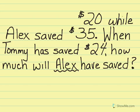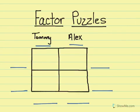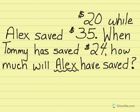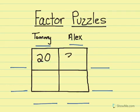This is a proportion problem. To solve this problem, we're actually going to use our factor puzzles. From the problem, we know that Tommy has saved $20 and Alex saved $35. Here you can see where I labeled one column Tommy and the other column Alex.